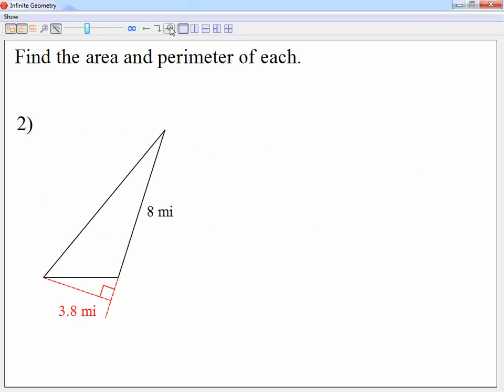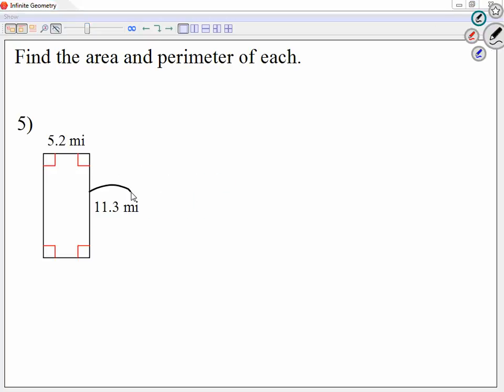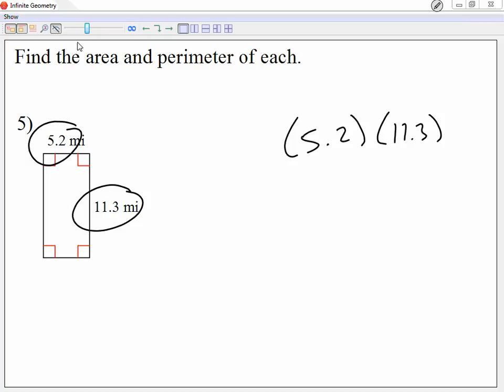Now for a rectangle, looking at question number 5, for a rectangle I see my numbers 5.2 and 11.3. Just multiply those out. 5.2, 11.3. This one does not have a half because it's not a triangle. So 5.2 times 11.3, 58.8.